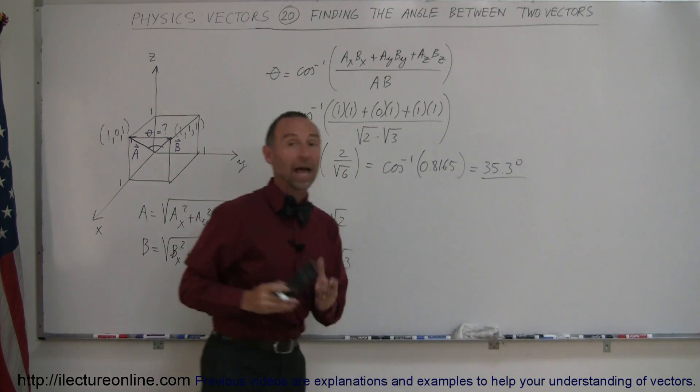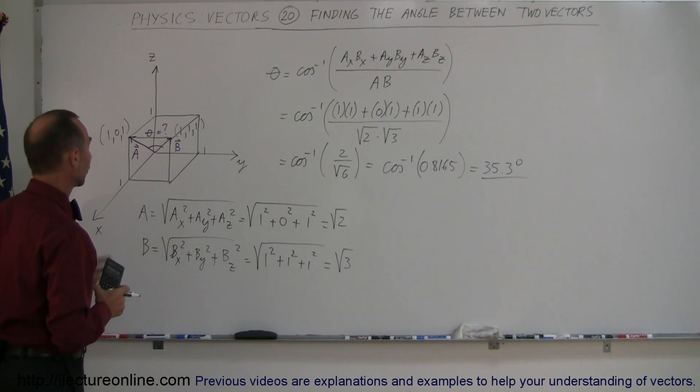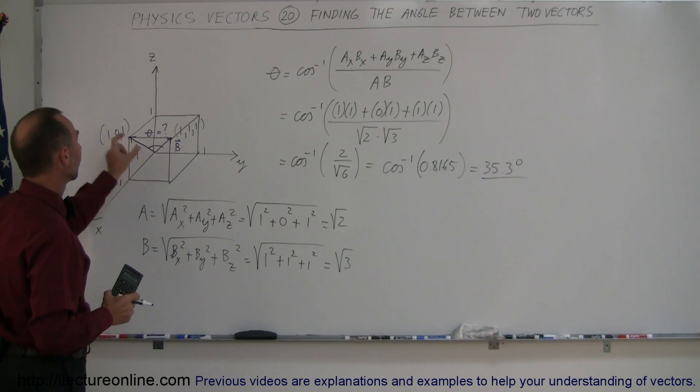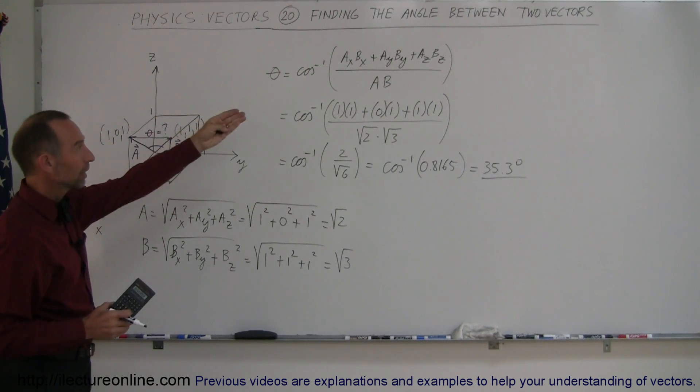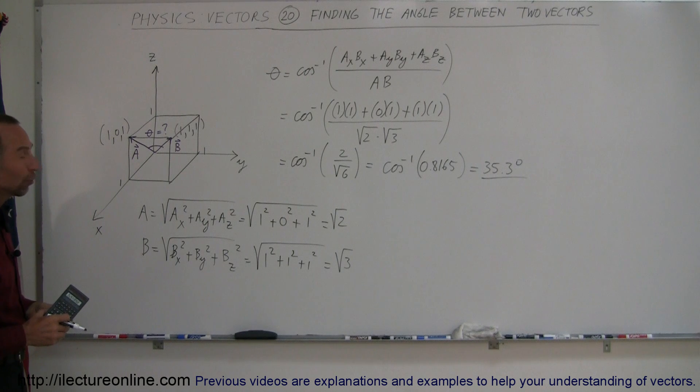And here's another example of how to find the angle between any two vectors. Find the magnitudes, find the x, y, and z components of each, plug it into the equation, and there you go. That is the angle between those two vectors.